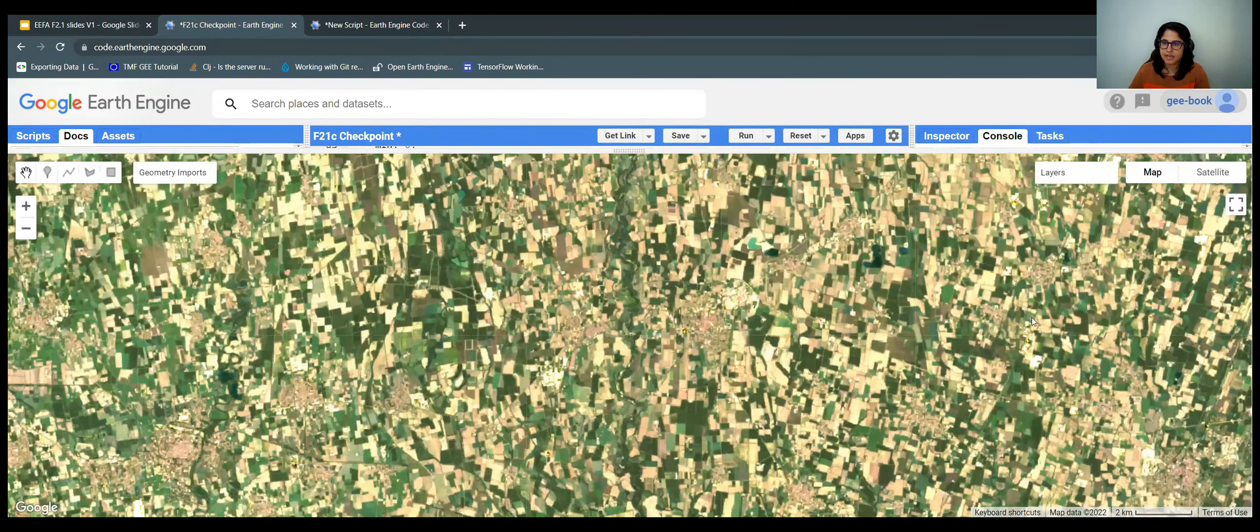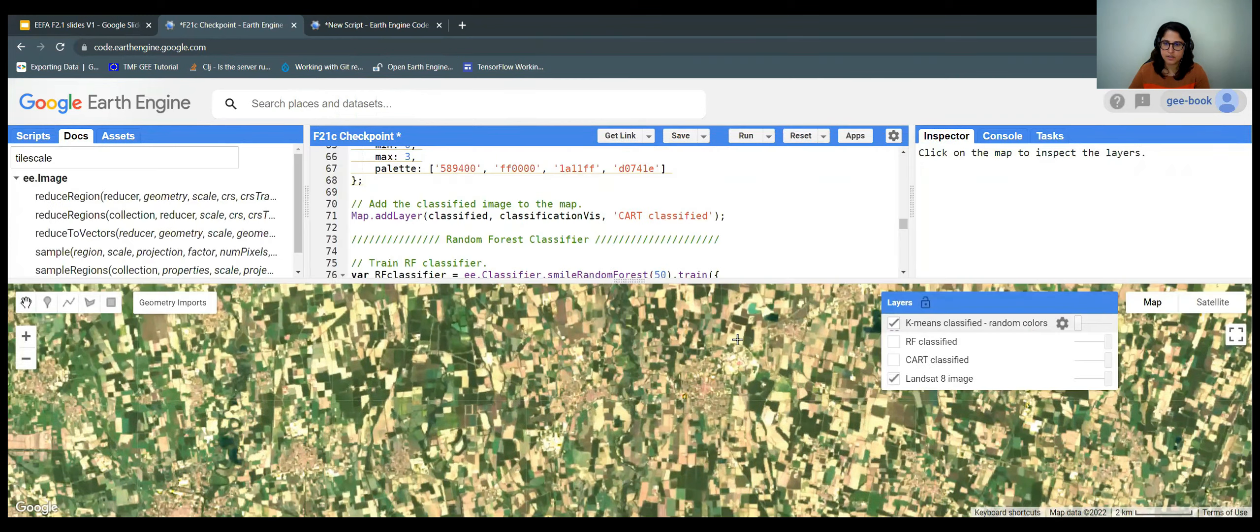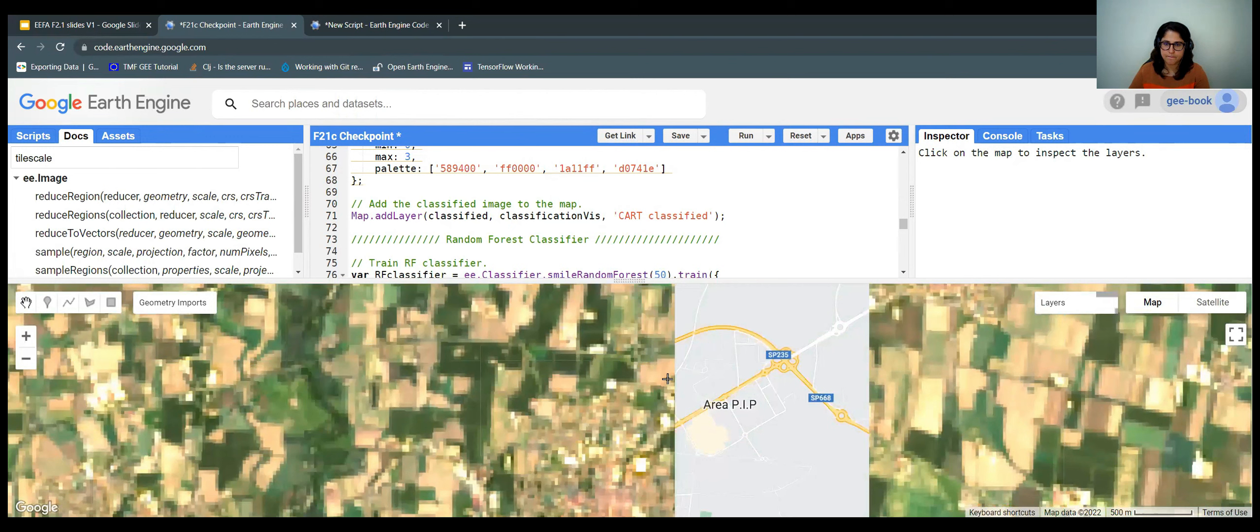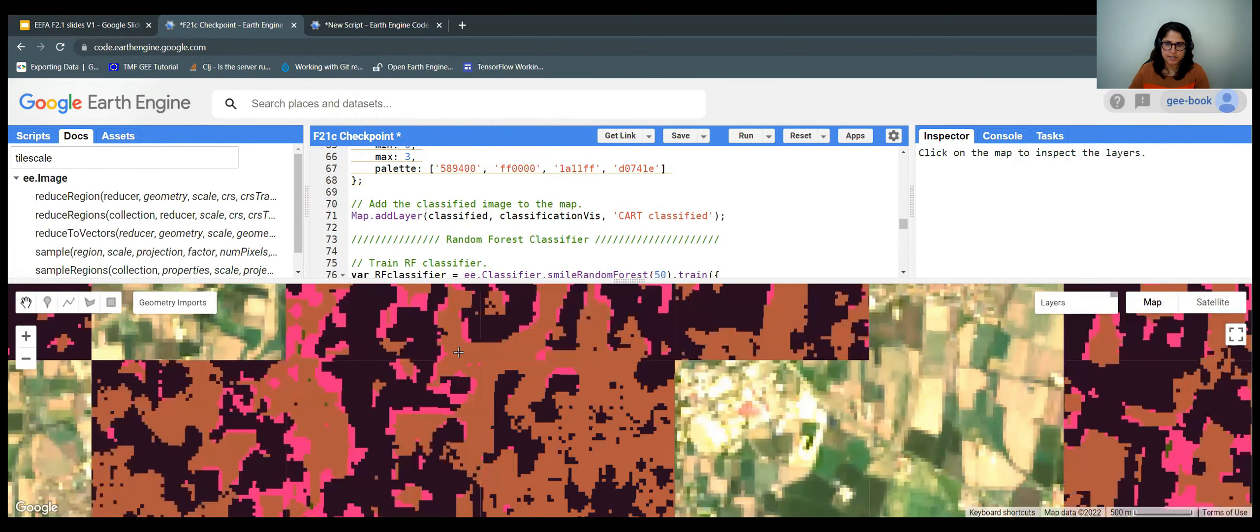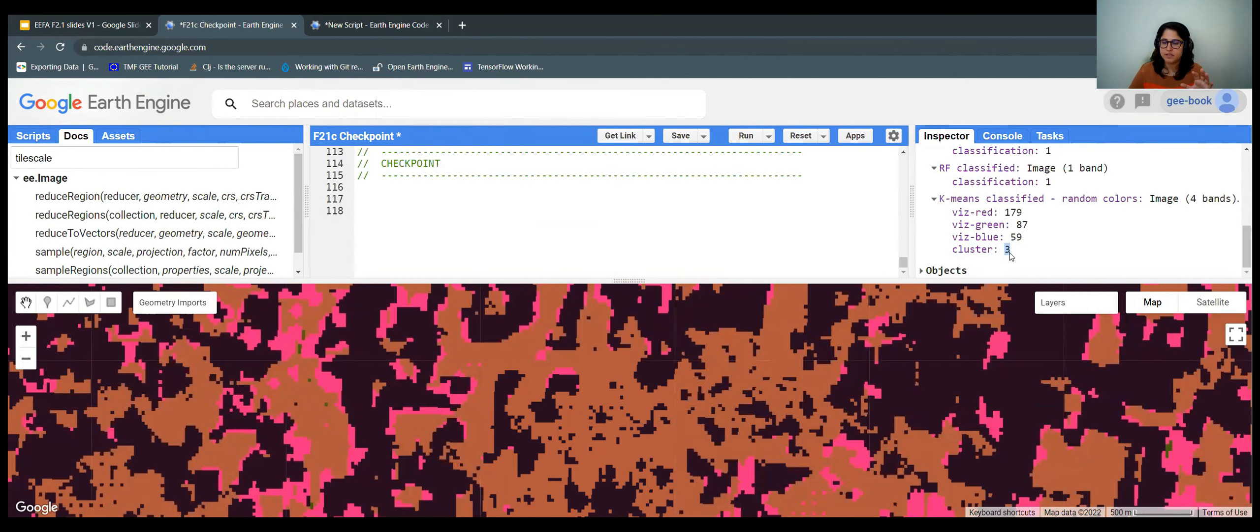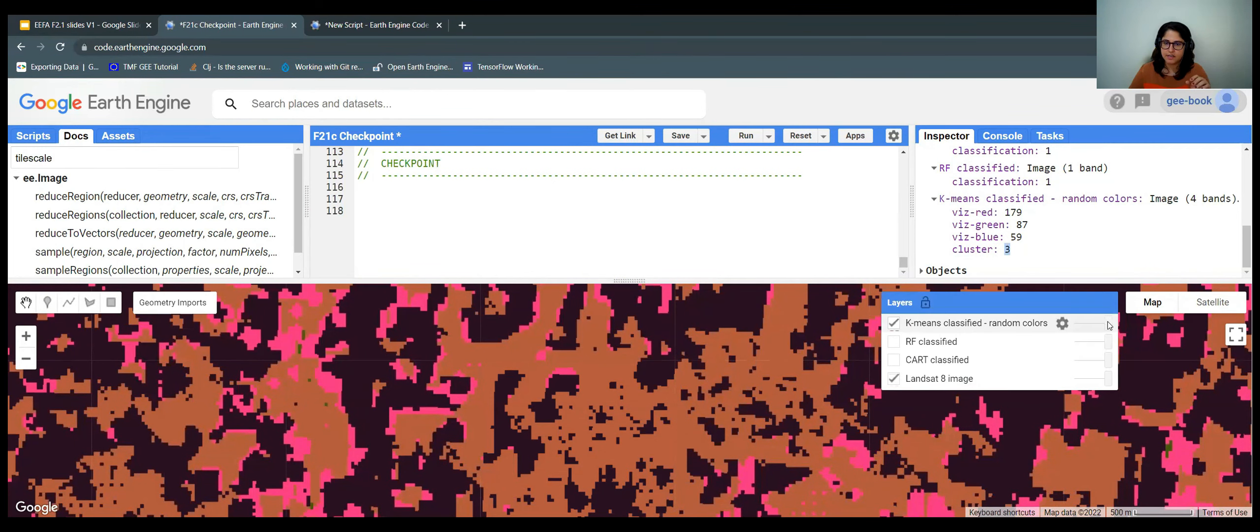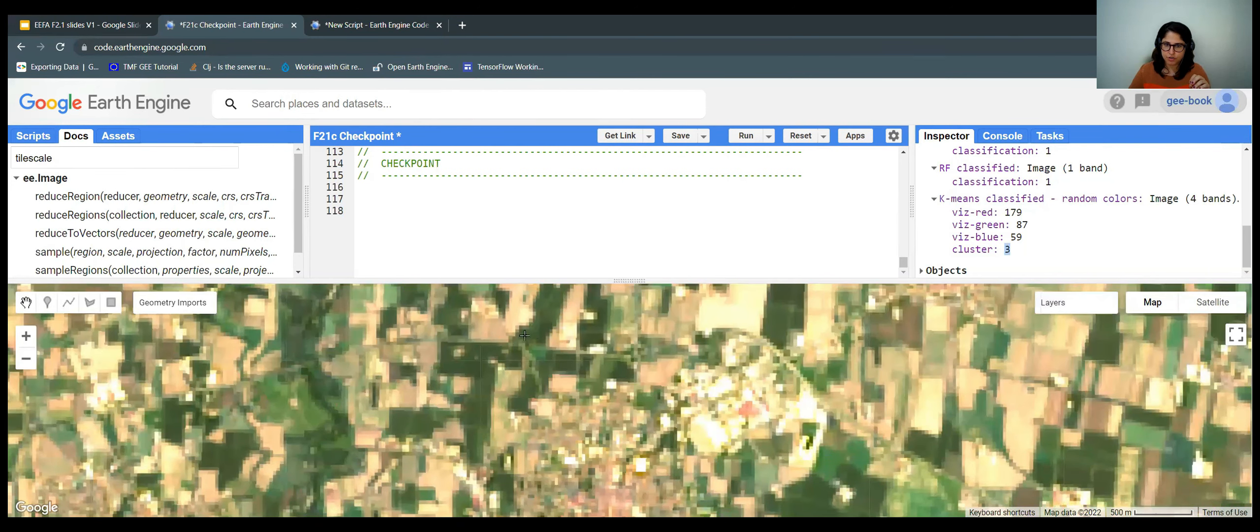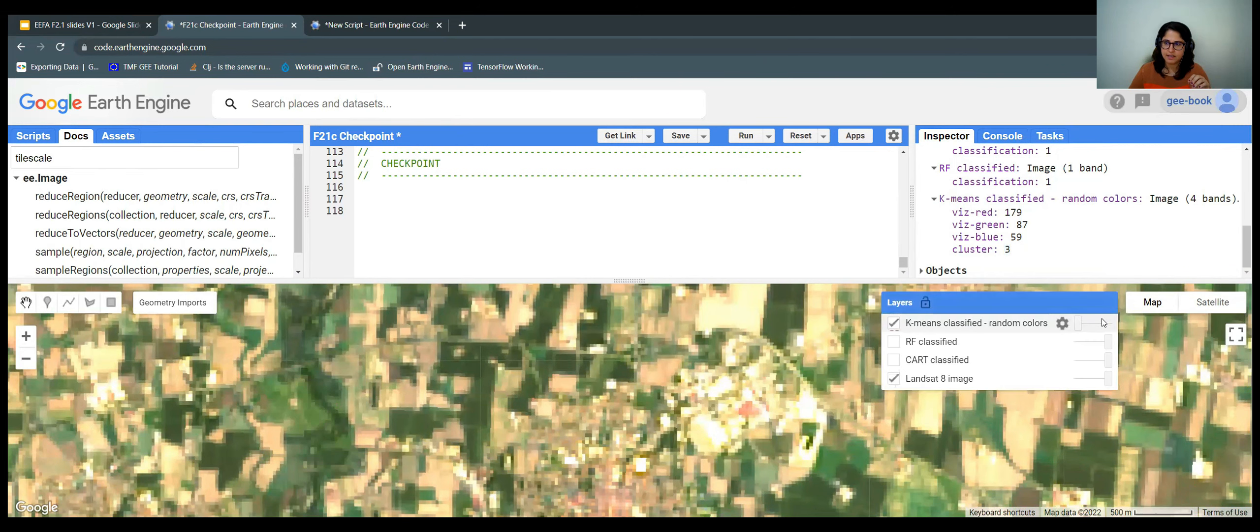And now that we have the unsupervised classification, we could go here, inspect each of these colors. For example, here the brownish colors, I could use the inspector tool, click it. And I have a class code here. So this is cluster number three. And I could assign different colors if I wanted. So I could take note that this brownish cluster are these mature croplands. So I could use the number three for that and assign a label.